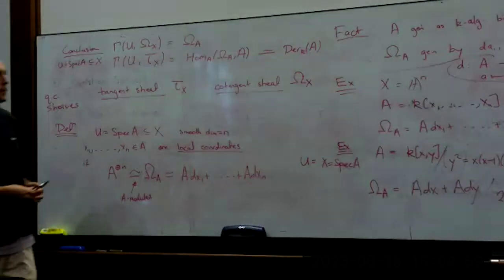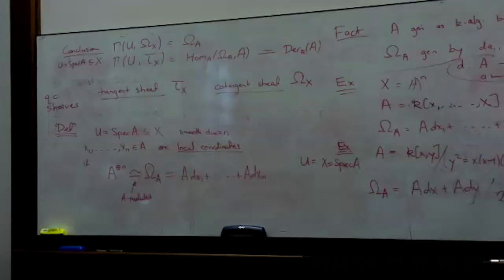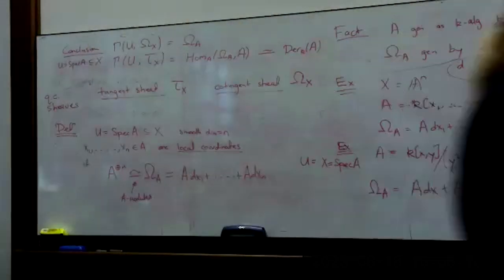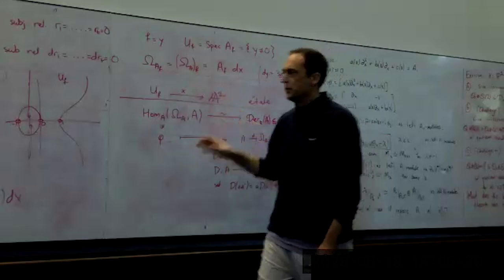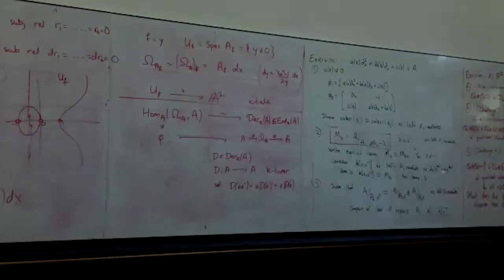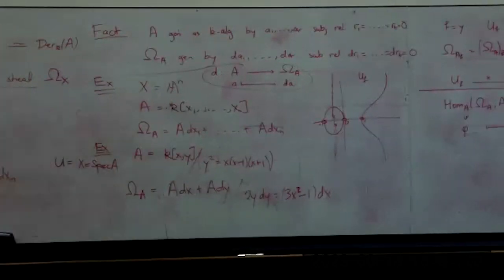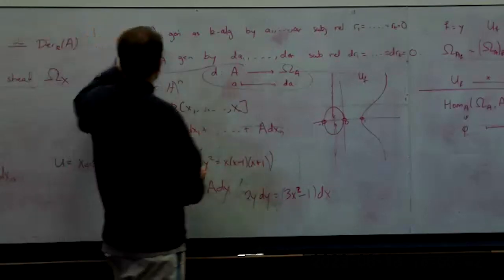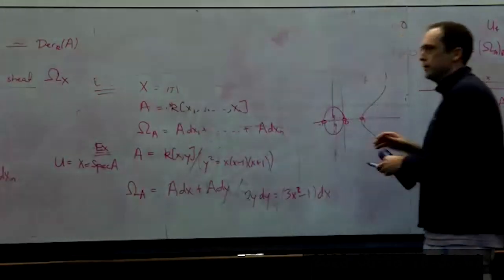Now we can talk about partial derivatives in a more intrinsic way. Given local coordinates x_1,...,x_n, we let del/del(x_i) be the derivations that take dx_j and spit out delta_{ij} — i.e., they form the dual basis. Pre-composing with d, these are maps from A to A which are k-linear and satisfy the Leibniz rule. This corresponds to saying del/del(x_i)(x_j) = delta_{ij}. Any element in A can be written in terms of these derivations: D(f) = sum_i del(f)/del(x_i) dx_i. There's an abuse of notation where I sometimes think of things as maps in Omega_A^*, sometimes as derivations of A.